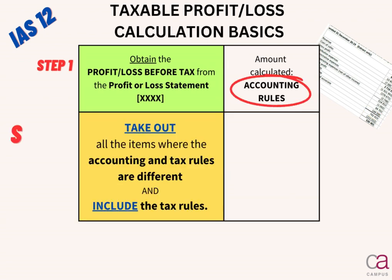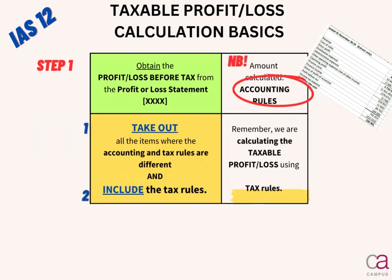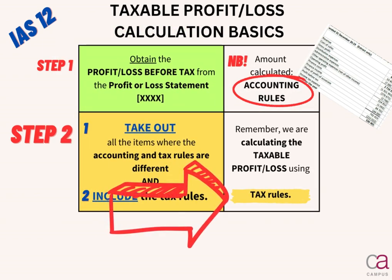Step two, we need to take out all the items where the accounting and tax rules are different and include our tax rules. Why do we do this? We need to focus on our tax rules because we are calculating our taxable profit or loss.